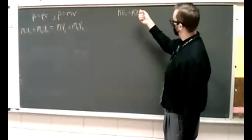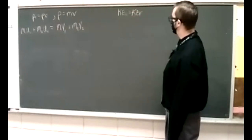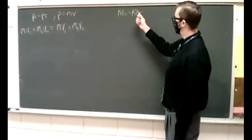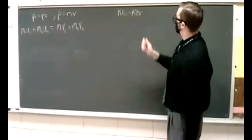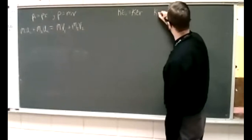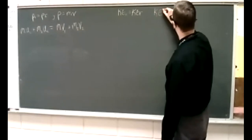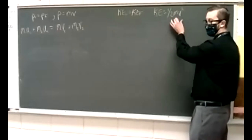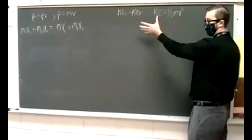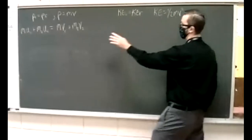By definition, a perfectly elastic collision is one where kinetic energy is conserved. Let's remind ourselves that kinetic energy in general is one half M V squared. You can maybe see why this is going to be some alphabet soup — we've got two objects, so we're going to do the same thing over here.